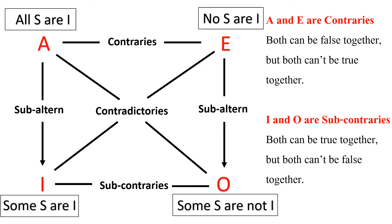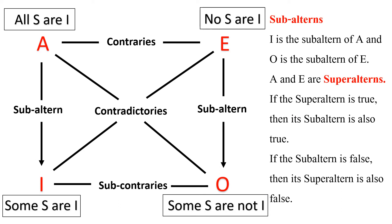Rule number 2: A and E are contrary to each other, which means both statements can be false together, but both can't be true together. However, I and O are subcontraries, which means both statements can be true together, but both can't be false together. Rule number 3: I is the subaltern of A, and O is the subaltern of E, which means A and E are superalterns. The rule says that if the superaltern is true, then its subaltern is also true. And if the subaltern is false, then its superaltern is also false.